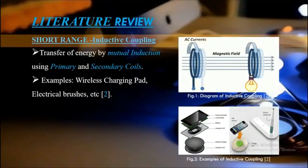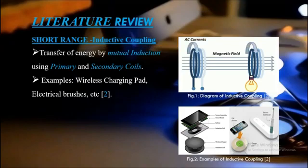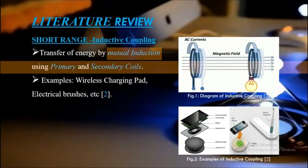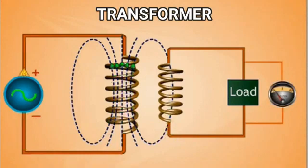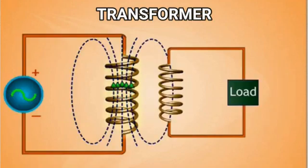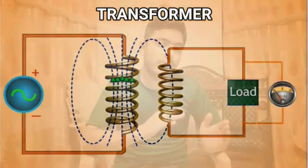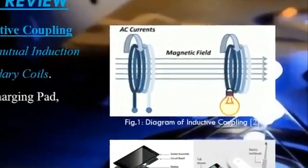To transfer electricity at short range, a technique called inductive coupling is used. It is the transfer of energy by mutual inductance using primary and secondary coils. A very common example is the transformer. A transformer has a primary coil and a secondary coil inside it. Current is passed to the primary coil, which is greater in size and higher in number of turns, inducing an electric field that leads to transfer of energy from the primary coil to the secondary coil at a very short distance, such as 1 to 10 centimeters, as demonstrated in the figure.